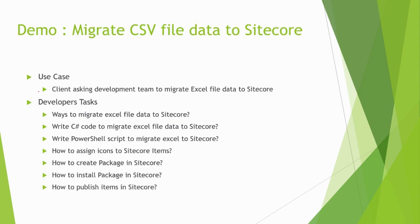Let's suppose our client is saying that we have to migrate CSV or Excel data to Sitecore. If you have this kind of use case, how can I use ChatGPT to accomplish it? On a high level, as a developer, first we have to find out the different ways, then choose one or two best approaches. Once we migrate the data, we can assign some icons, create packages from our Sitecore environment, install on the production environment, and then publish the items.